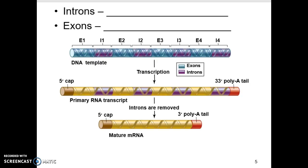Every time DNA goes through transcription and translation, it has to transcribe into RNA, clean up the RNA, chop out certain pieces, and send only the condensed — what you call the good code — out of the nucleus. Introns stay in; we don't know what they code for. Exons exit the nucleus and will code for your amino acids.